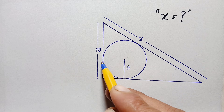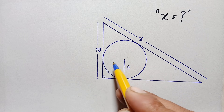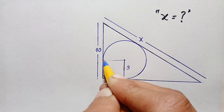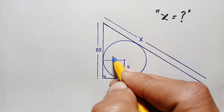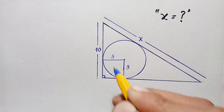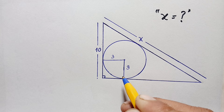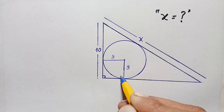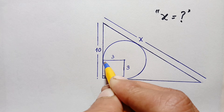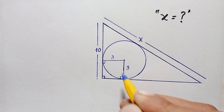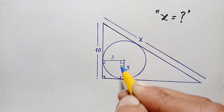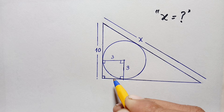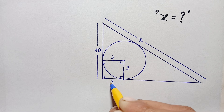Our first step is to join the center with the points of tangency and draw radii. This radius is 3 units, so the other drawn radius will also be 3 units. As we know, the radius is always perpendicular to the tangent line at the point of tangency. Therefore, we have right angles at those points. With four right angles, this figure is a square, so all four sides are 3 units.